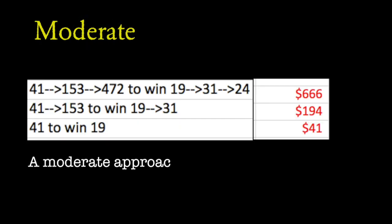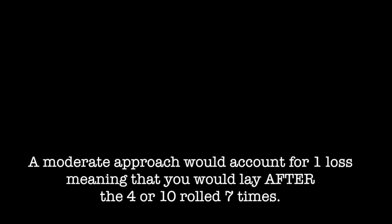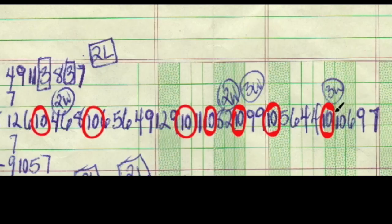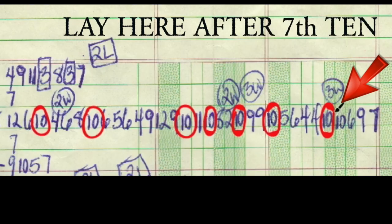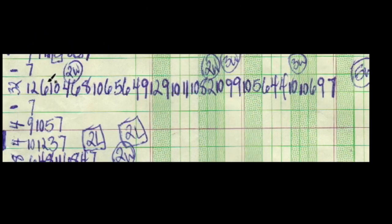A moderate approach would account for one loss, meaning that you would lay after the four or ten rolled seven times. Extreme would mean that you would execute a lay bet after the four or ten rolled six times.